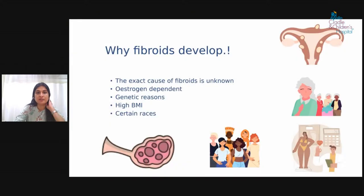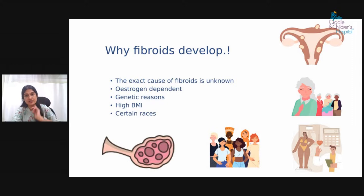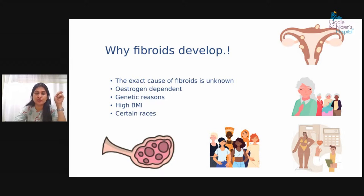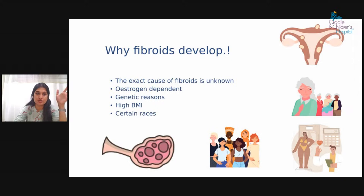Why do fibroids develop? Even as gynecologists, the exact cause is unknown. One thing we are very sure of is that fibroids are estrogen dependent. That's why they are most common in the reproductive age group, before menopause. Once estrogen comes down at menopause, the fibroids shrink.